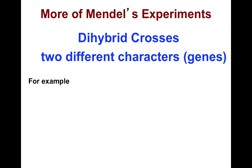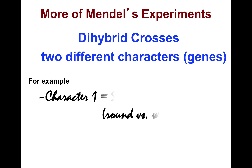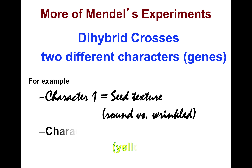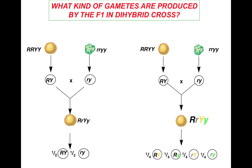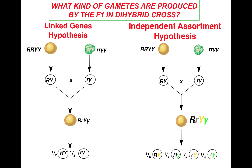Mendel also looked at two different characteristics at the same time, and this led him to another important discovery. These are called dihybrid crosses, using two different characters or genes, each with two alleles. One characteristic was seed texture — round versus wrinkled — and another was seed color — yellow versus green. He asked: what kind of gametes are produced in the F1 dihybrid cross? Are the genes linked, or do they assort independently — do they separate and segregate from each other?